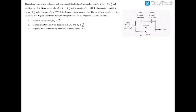Here we have a collection tank with three inlets putting steam in and one outlet. At the first inlet, we have a quality of 0.9, so it's a two-phase mixture. The pressure at all inlets and outlets is one bar. We have the mass flow rates at all the inlets but not at the exit. We're also told that heat exits the collection tank at a rate of negative 40 kilowatts.